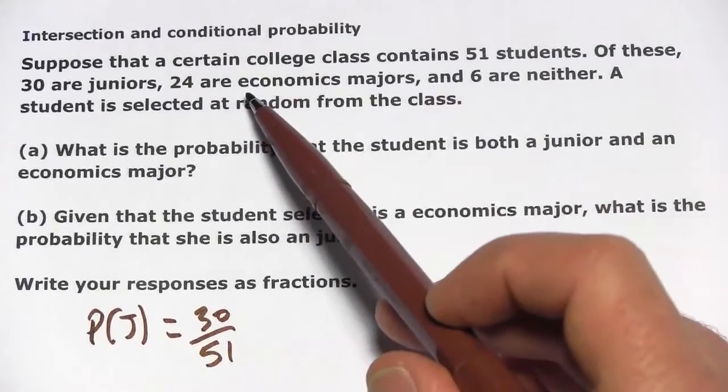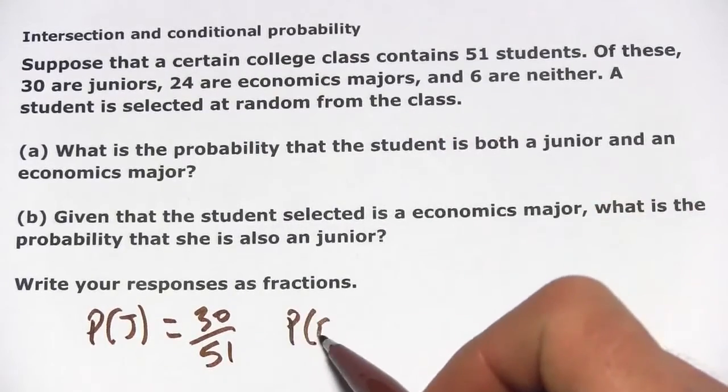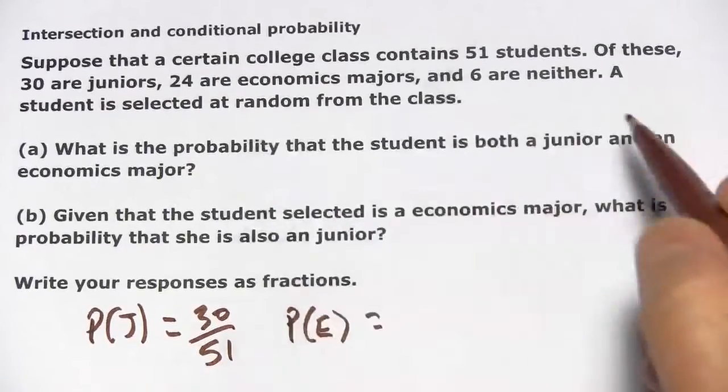We also have the probability of being an economics major, so the probability of E is 24 out of 51.